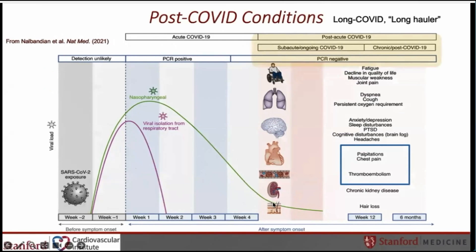Even after the recovery phase, long COVID patients continue to have a constellation of symptoms, even as far as six months and beyond. These include fatigue, decline in quality of life, muscular weakness, joint pain, dyspnea, cough, anxiety, post-traumatic stress syndrome. In cardiovascular patients, they were often found with palpitations, chest pain, and issues related to thromboembolic phenomenon.